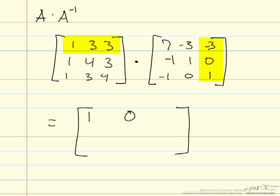The second row is 7 minus 4 minus 3, that's 0, negative 3 plus 4 is 1, and then negative 3 plus 0 plus 3 is 0. And then negative 3 plus 0 plus 4 is 1, and we've returned our identity matrix.